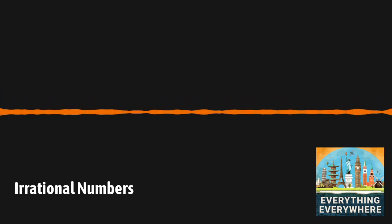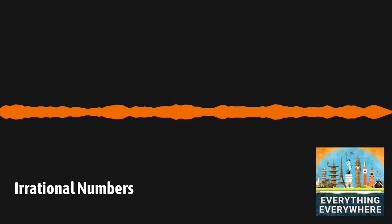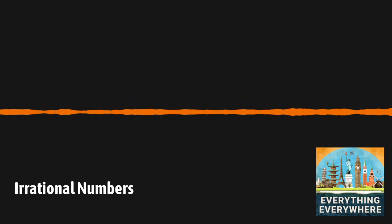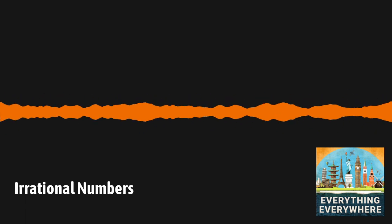Mathematicians have a way of classifying numbers into sets that can be visualized as a group of concentric circles. At the core are the natural numbers. These are the numbers that everyone is familiar with and are also called the counting numbers. One, two, three, four, etc.